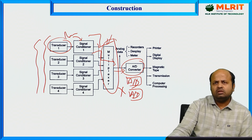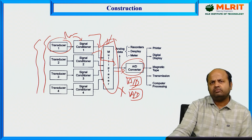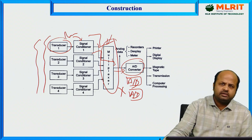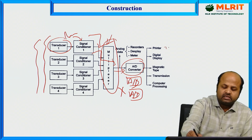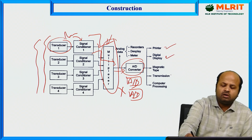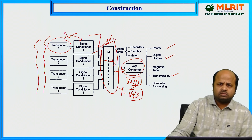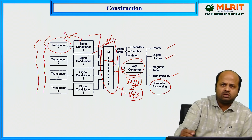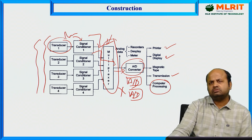So instead of using multiple ADC converters, by using a single ADC and a multiplexer, we can transfer multiple inputs to the ADC converter. Once the data is converted to digital format, we can attach a printer, digital display, or do further transmission for other applications. We can also give the data to a computer for processing. This is the basic block diagram of a data acquisition system.